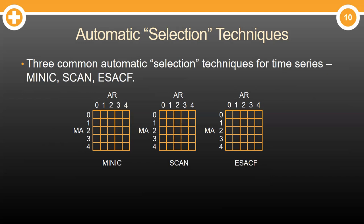Three common techniques are called the MINIC, SCAN, and ESACF. The MINIC, minimum information criterion. This basically builds many combinations of models across a grid search of AR and MA terms. It then finds the model with the lowest Bayesian information criterion. Simple.